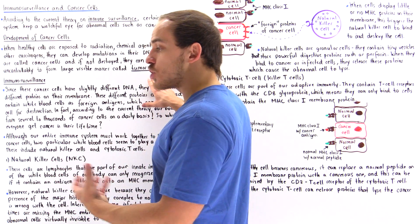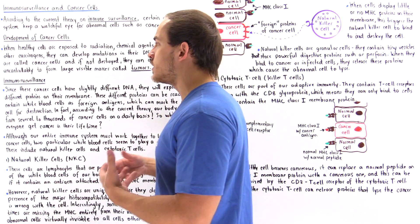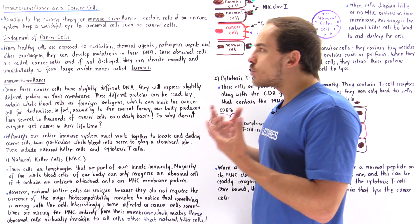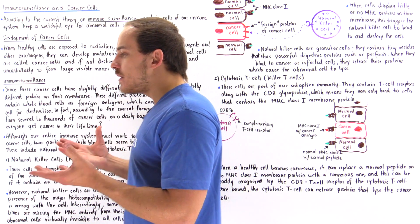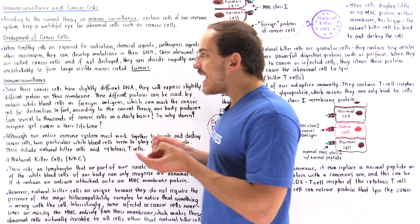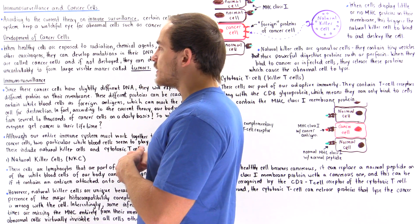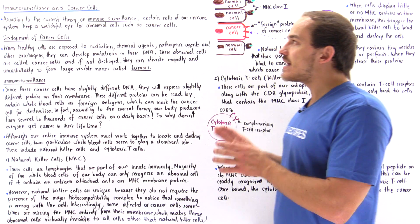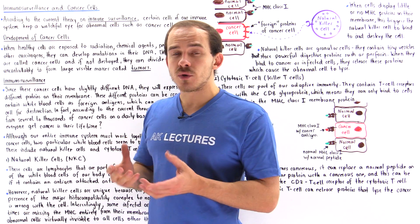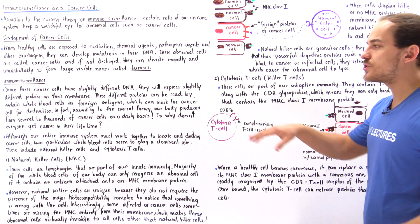Because these tumors are so large, they can affect the way that our body functions and can ultimately kill that individual. Interestingly, not everybody actually develops cancer in their lifetime. On a daily basis we produce anywhere from several to a thousand of these different cancer cells, so how exactly does our immune surveillance system — our immune system in general — actually detect and destroy these cancer cells?